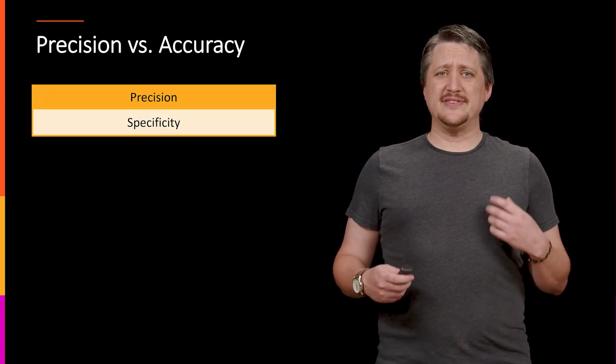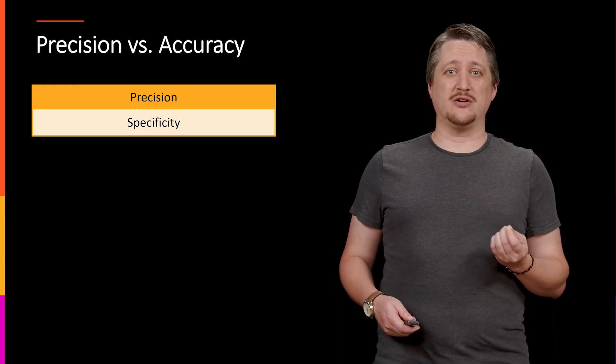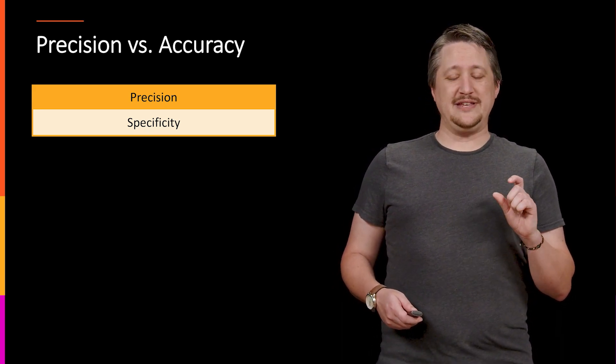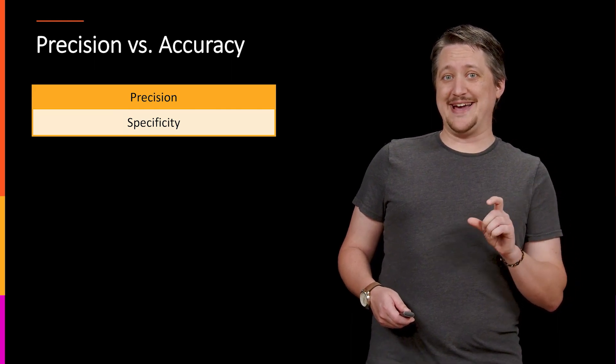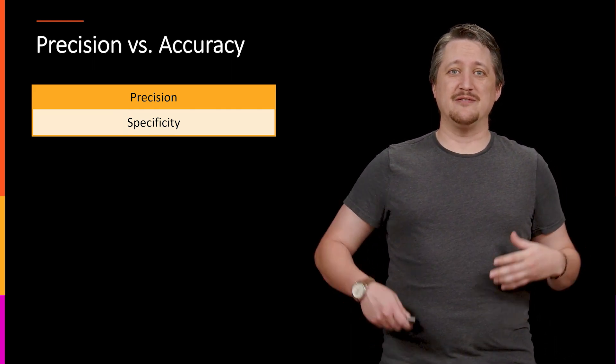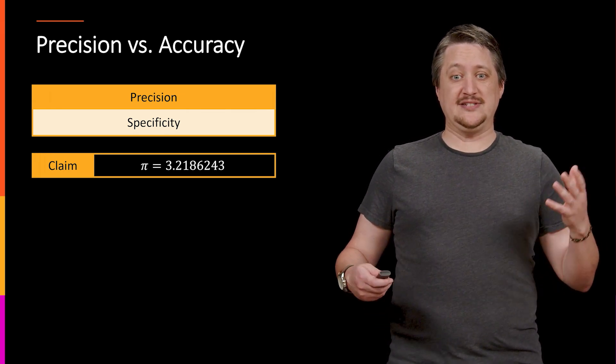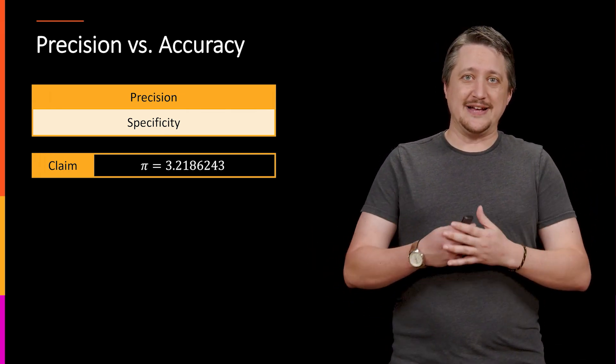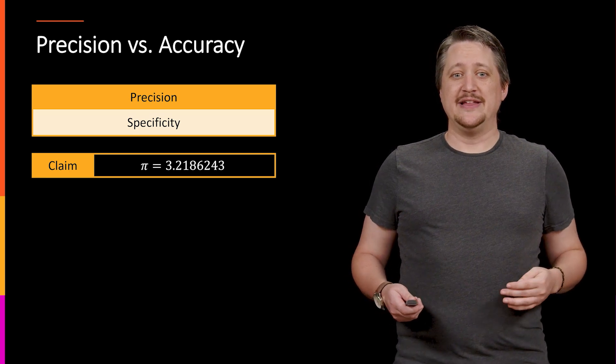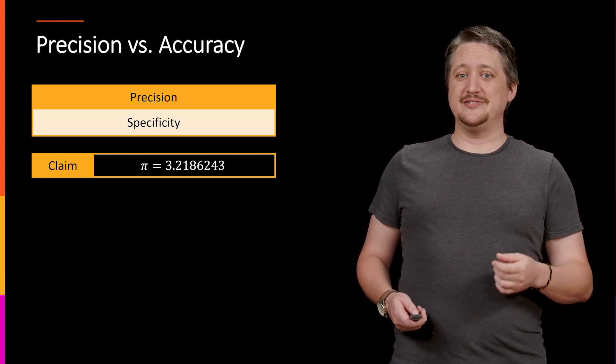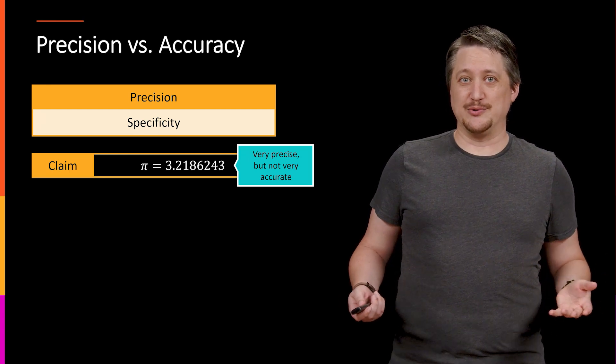So precision has to do with how specific we are. It's easy to confuse being specific with being accurate, which is why we're talking about this. But for example, I could say pi is 3.2186243. Like I give a whole bunch of these numbers. That would be very precise despite the fact that that's not actually true.